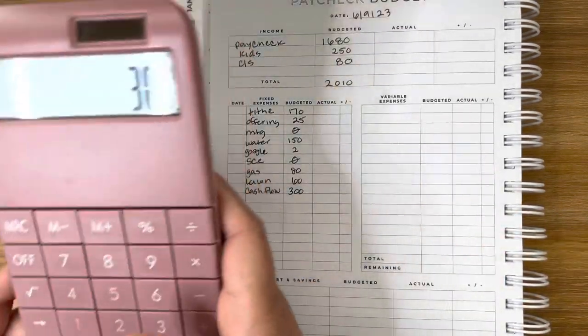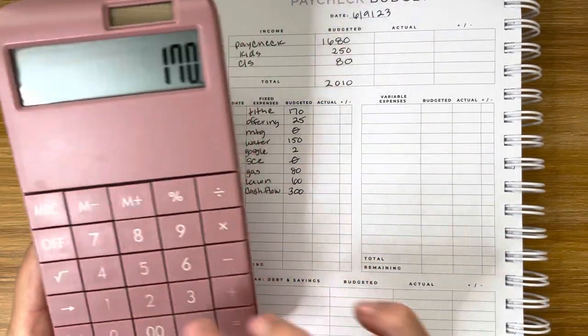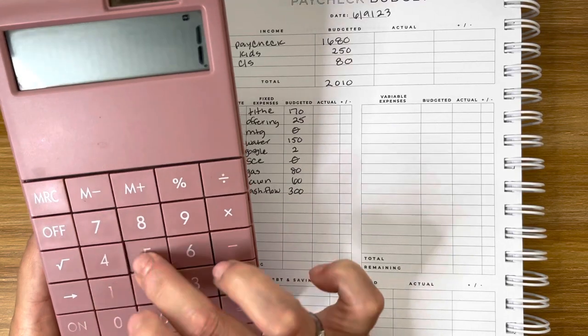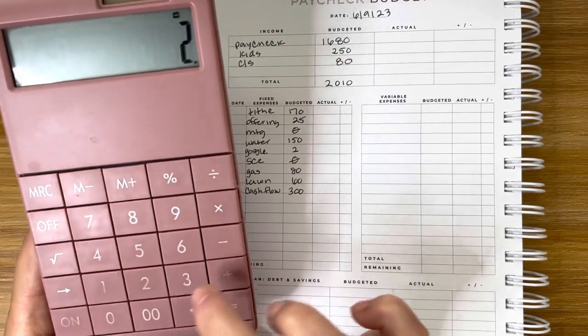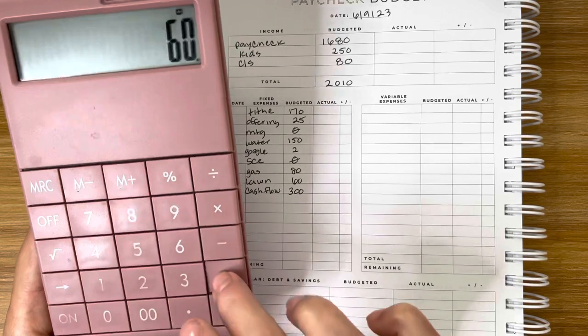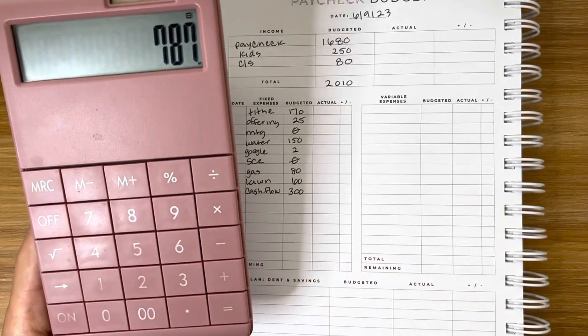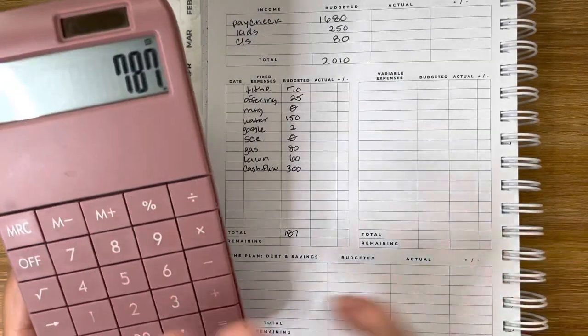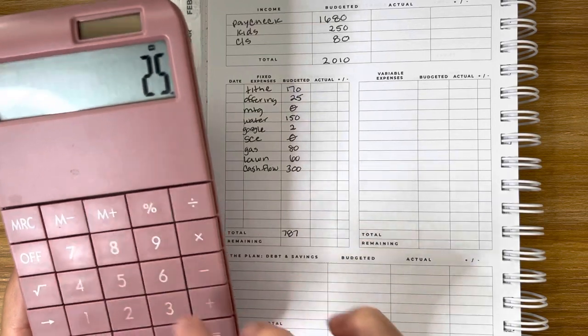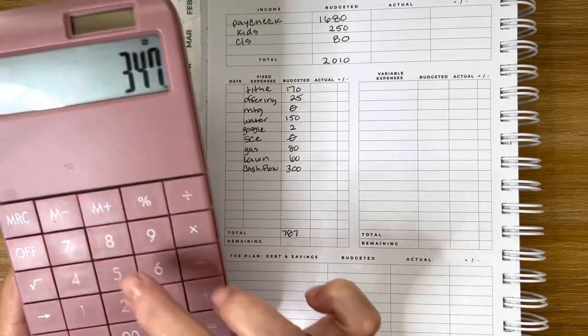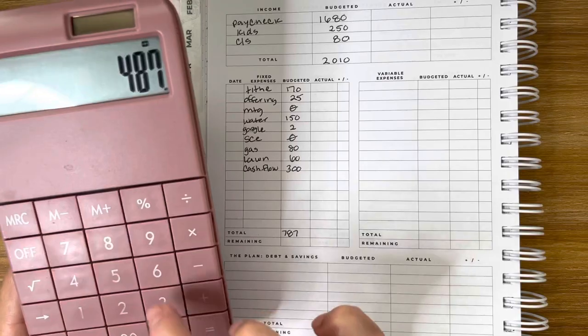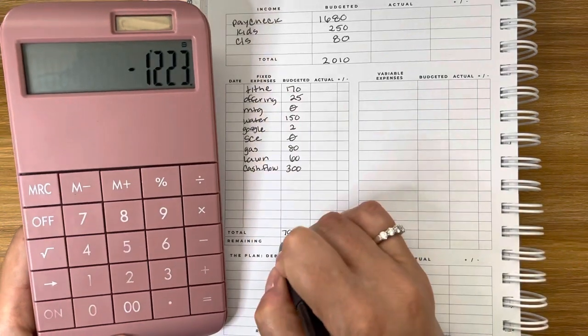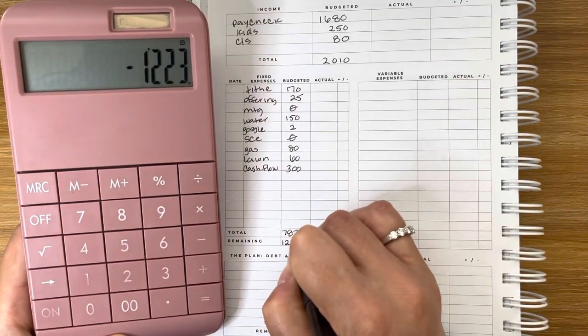Let's add that up. $170, $25, $150, $2, $80, $60, and $300. $787. Let's check our math again. $170, $25, $150, $2, $80, $60, and $300. $787. Let's deduct our income. We have $1,223 left over.